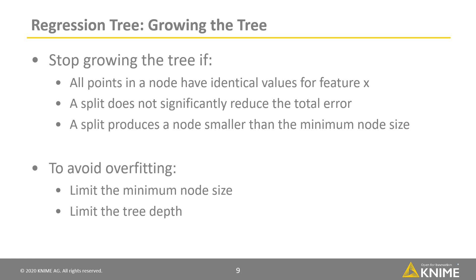We stop growing the tree if all points in a node have identical values for all input features x. We also stop if the split does not significantly reduce the total error. In addition, we stop if a split produces a node smaller than the minimum node size.